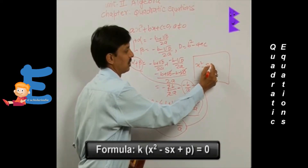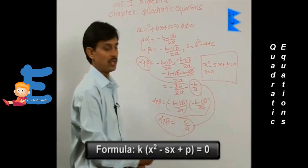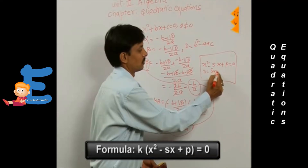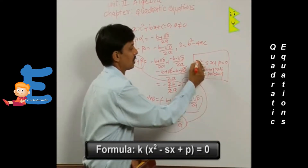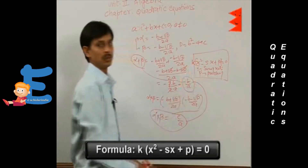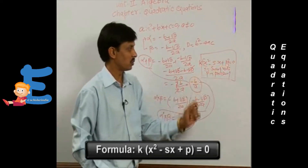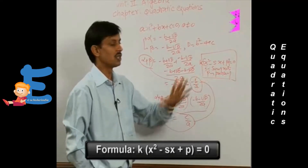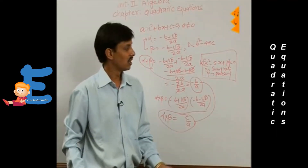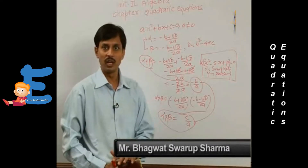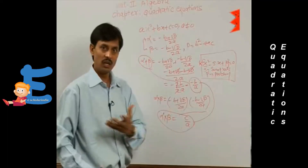The formula for finding the quadratic equation if roots are given is: k(x² - sx + p) = 0, where s is the sum of roots and p is the product of roots. We can also use a constant k here. If roots are given, we can easily find their sum and product, and apply k(x² - sx + p) = 0 to find the equation.